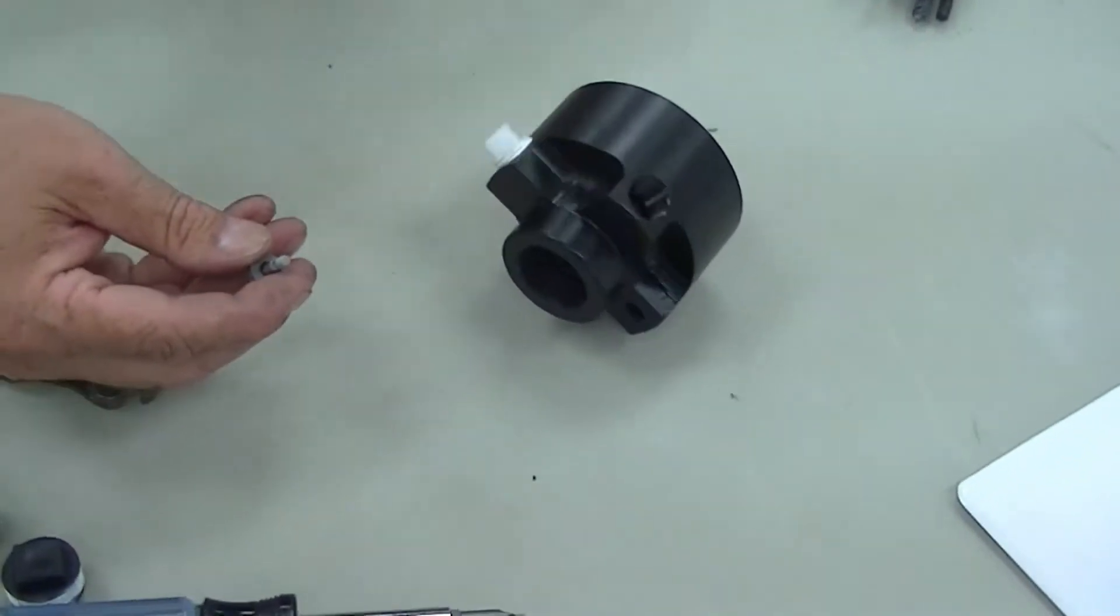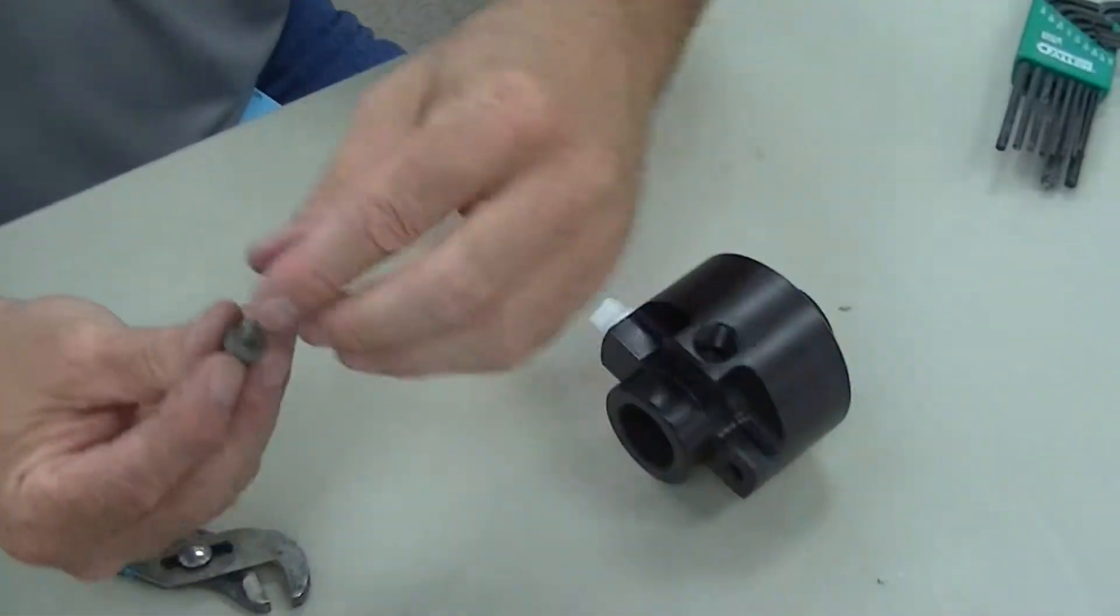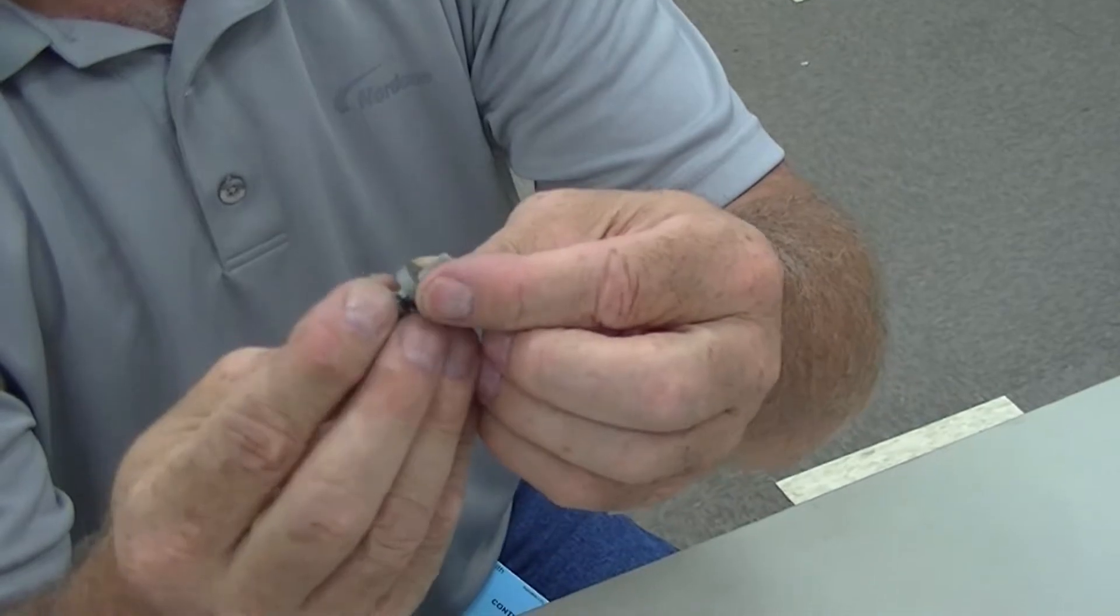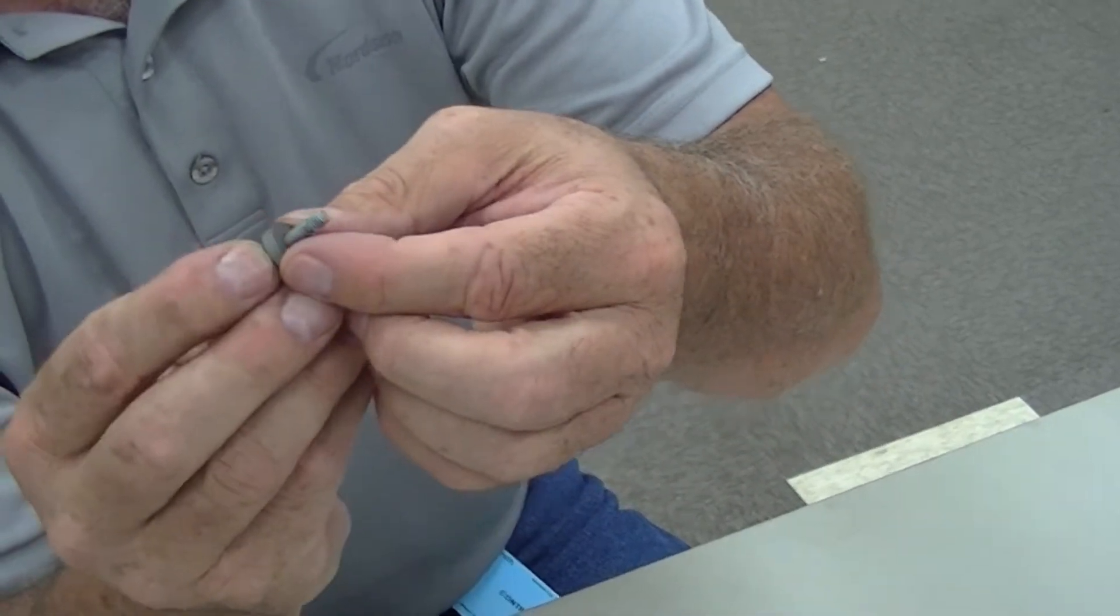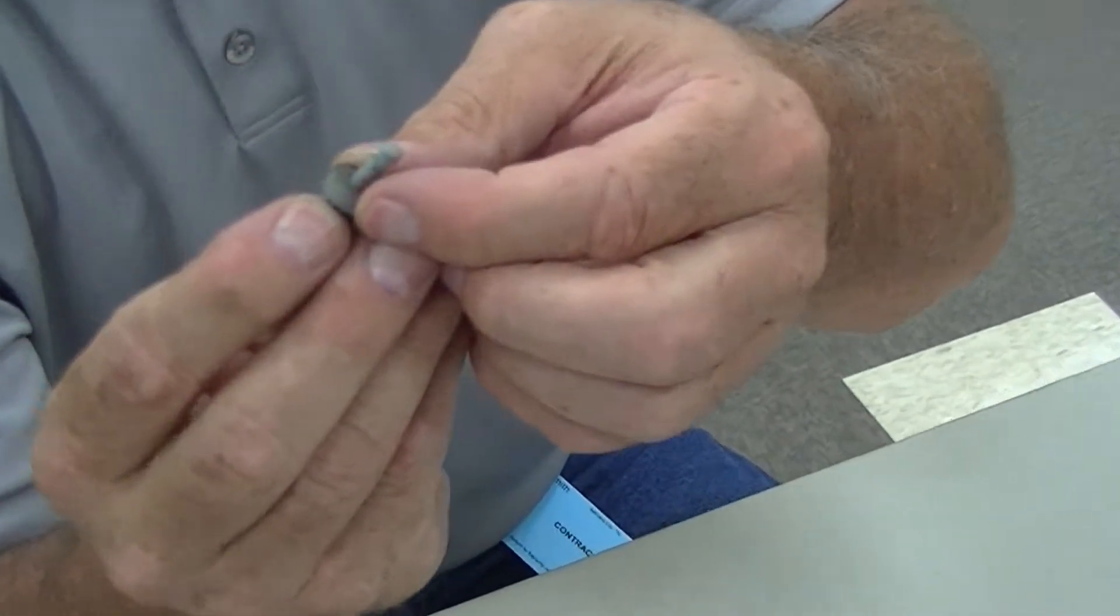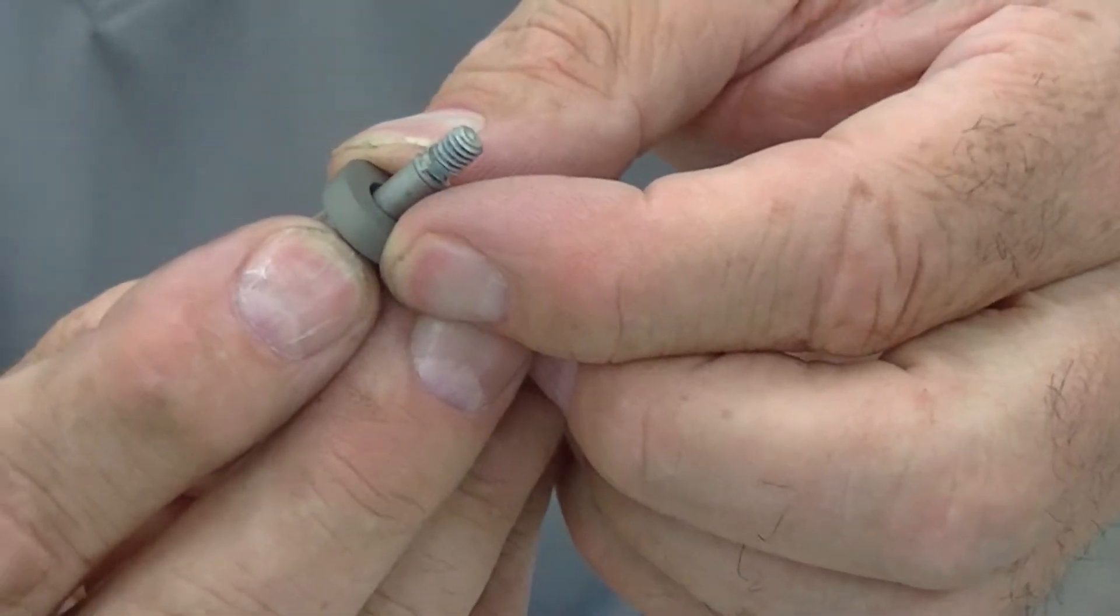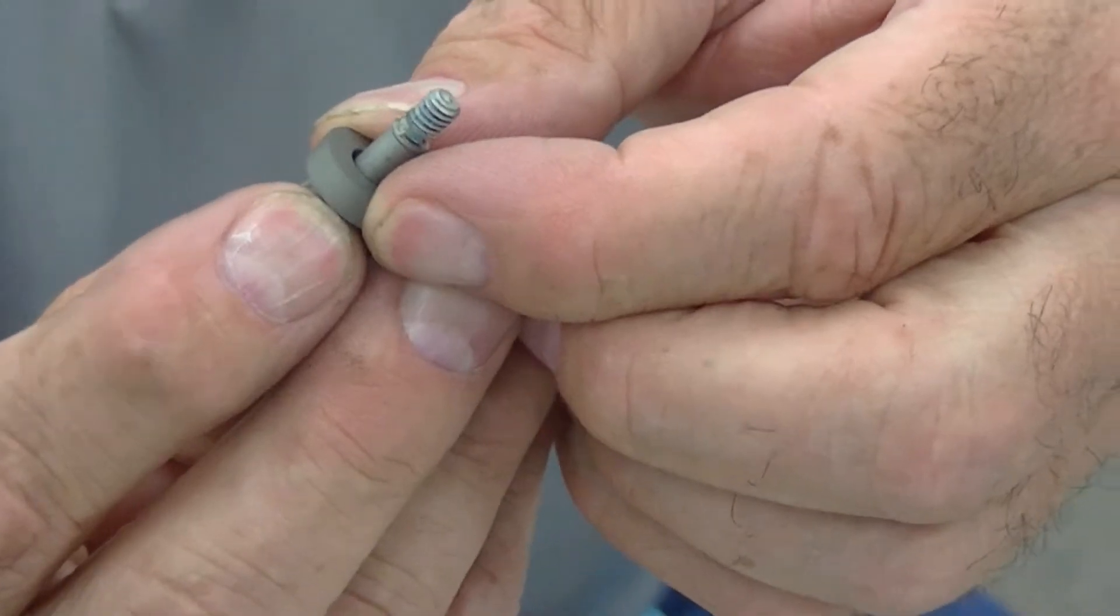You've got a little clear washer you want to make sure you don't lose. Then you have your stem and your seat and what happens, this works up against there. Air pressure moves this, allows it to open and close. The more open, the more flow. All the way closed would be no flow or low flow.